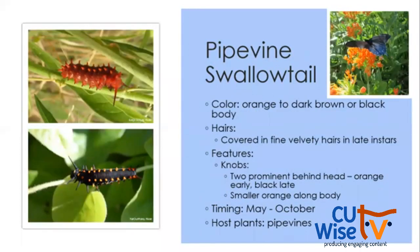Next is the pipevine swallowtail, which looks very different from the last two — an orange to dark brown or black body with knobs. You can see two prominent knobs behind the head and smaller orange knobs along the body. In later instars, the caterpillar is covered in fine velvety hairs. May through October, you can find them feeding on pipe vines.